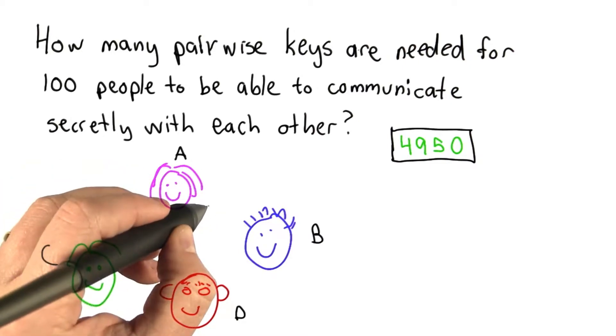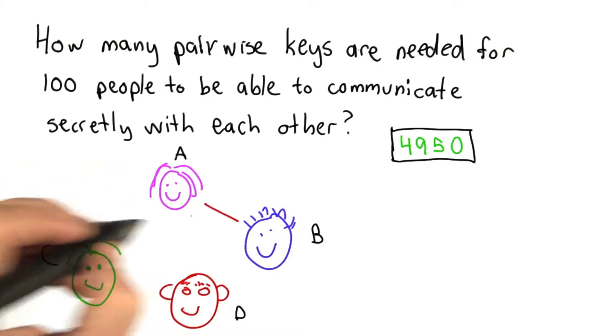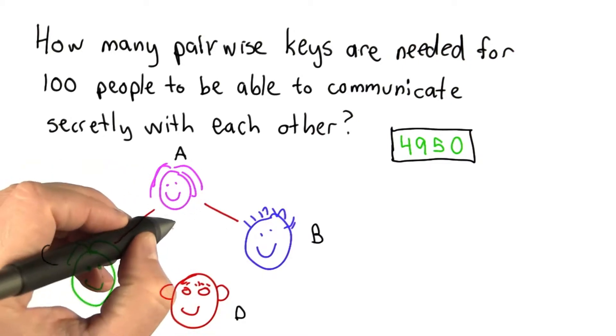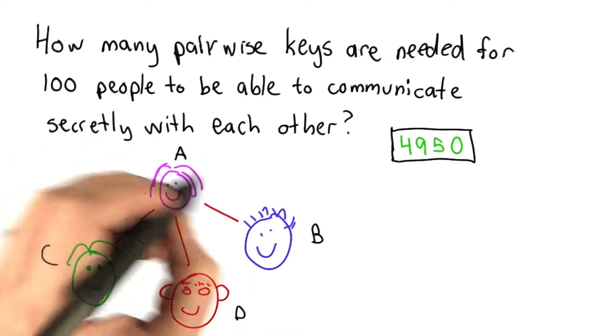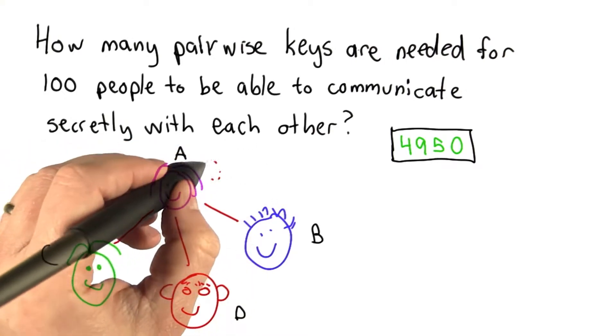Alice needs a pairwise key with Bob. She needs a pairwise key with Charlie, and she needs a pairwise key with Daniel. That's 3 keys for Alice, and so that's the number of people minus 1, since she doesn't need a key with herself.